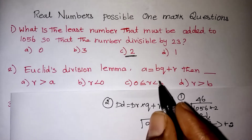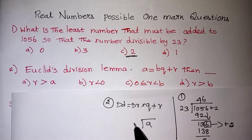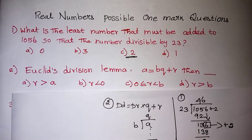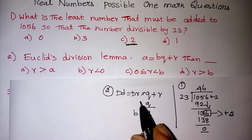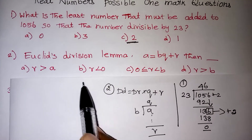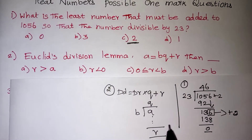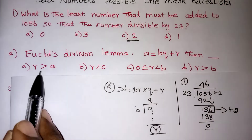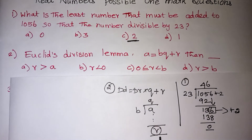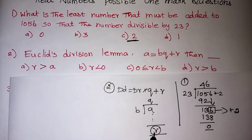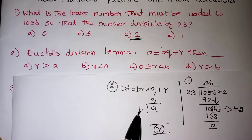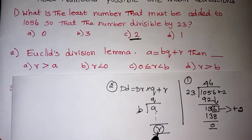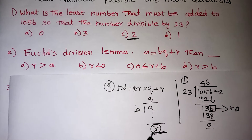In the formula, dividend is given as a, divisor is b, quotient is q, and remainder is r. For this division, which rule is correct? They are asking whether remainder should be greater than a — that is not possible. The remainder must always be less than the divisor.